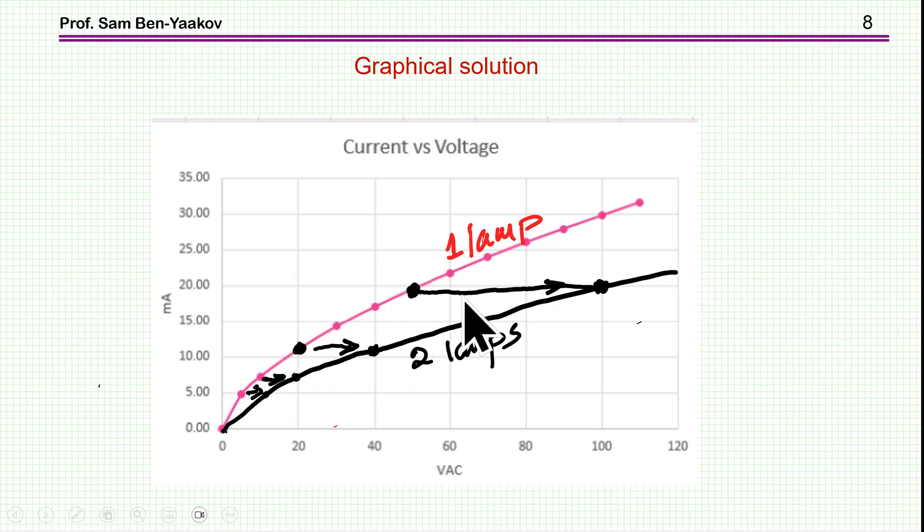So here's what I'm doing. The red one is a single lamp. Now, if I want to have a characteristic of two lamps in series, then the two lamps will have the same current, but the voltage will double. So this is the line for two lamps.